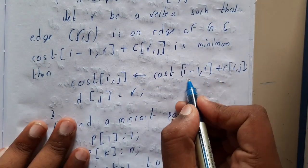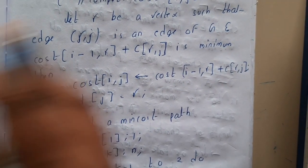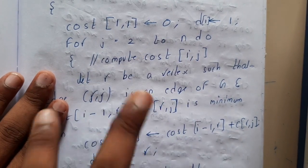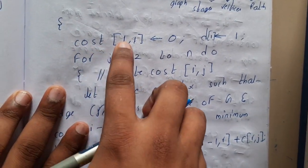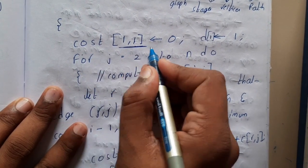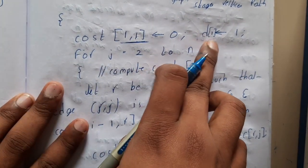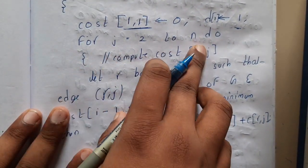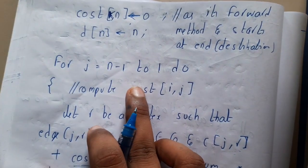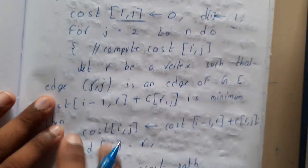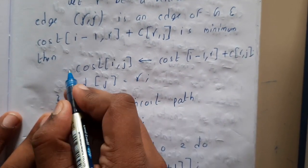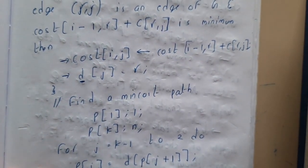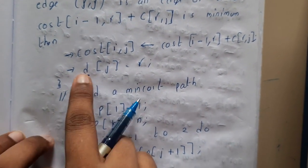Now let us go through the backward approach. The backward approach has the same process, but the change is that previously we came from back to forward, now we go from forward to backward. So initially start with cost(1, 1) — we can directly initiate it to 0 — and D(1) = 1. For j = 2 to N, we calculate from first to last, computing the cost of each vertex and substituting the distance vector, then calculating the minimum cost using the same approach.